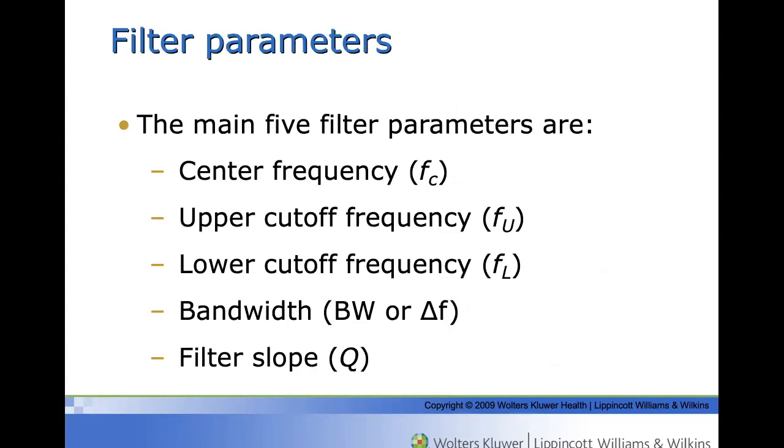Filter properties are characterized by a number of parameters. The main five filter parameters are upper cutoff frequency, the lower cutoff frequency, the center frequency, the bandwidth, and filter slope. All of these characteristics apply to band-pass and band-reject filters, but only the cutoff frequencies and slope apply to low-pass and high-pass filters.